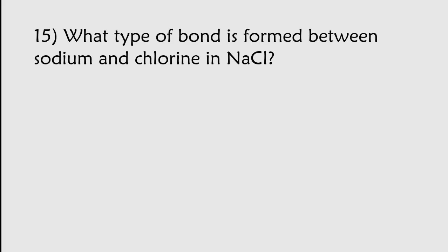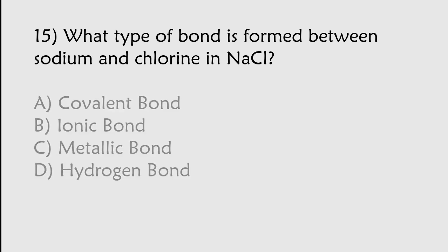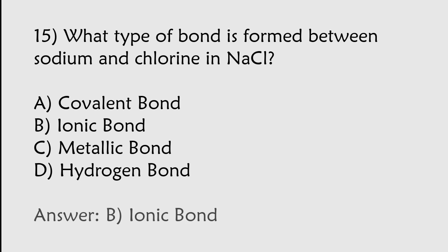Which type of bond is formed between sodium and chlorine in NaCl? Covalent bond, Ionic bond, Metallic bond, Hydrogen bond. The correct answer is option B. Ionic bond is the type of bond which is formed between sodium and chlorine in NaCl.